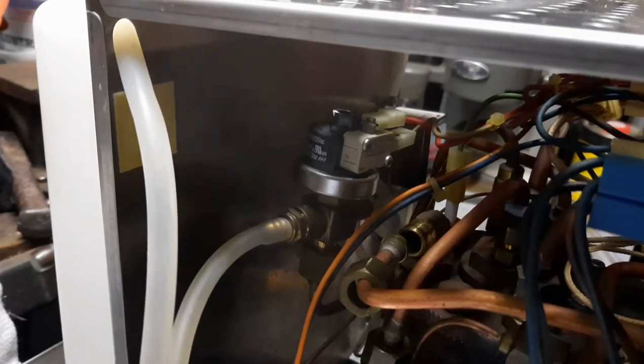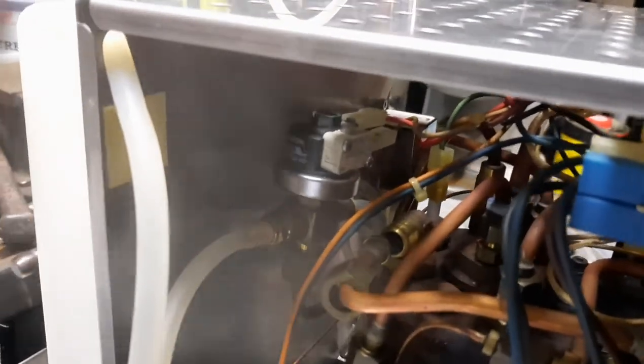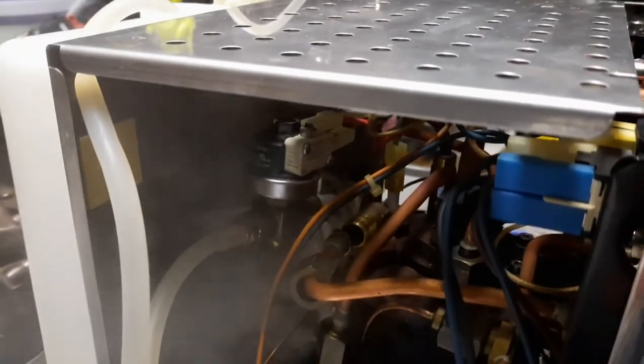All right, the steam's building up and it looks like we've got, and that's not even up to the temperature and you can see we're already getting lots of steam. So I'm just going to turn it off again. So obviously the problem is in the steam tap itself, so we'll be pulling that apart next. I'll turn that off.